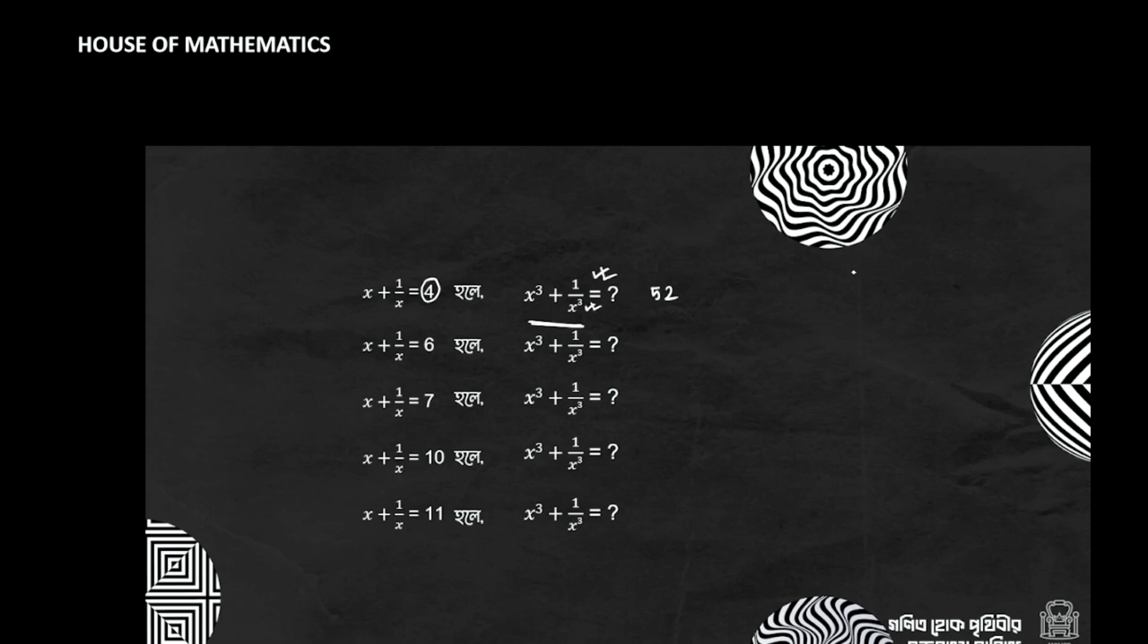This formula will be given to us. We have x plus 1 by x equals to q. We will know that, we will answer q. So we have x cube plus 1 by x cube. This will be given q cube minus 3q.